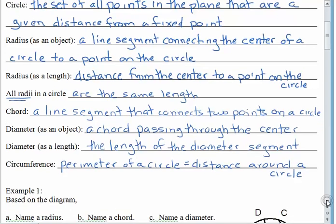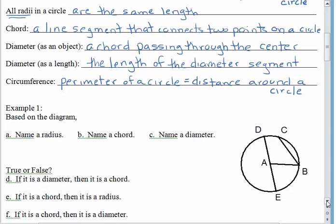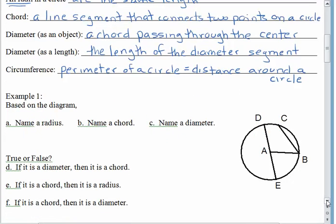So let's test this vocabulary out a little bit. Here we have a diagram and the first thing we'd like to know is do you see a radius? So we actually have several radii in here. Maybe pause the recording, see if you can name a radius, a chord, and a diameter.